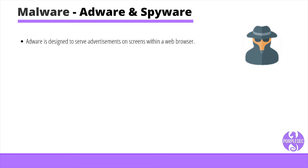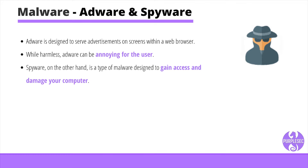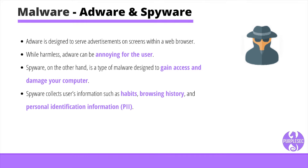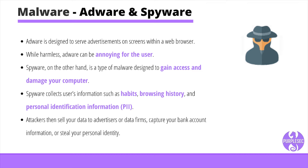Adware and spyware are both unwanted software. Adware is designed to serve advertisements on screen within a web browser. It's usually quietly installed in the background when downloading a program without your knowledge or permission. While harmless, adware can be annoying for the user. Spyware, on the other hand, is a type of malware designed to gain access and damage your computer. Spyware collects users' information such as habits, browsing history, and personal identification information. Attackers then sell your data to advertisers or data firms, capture your bank account information, or steal your personal identity. Spyware is often downloaded in a software bundle or from file sharing sites.